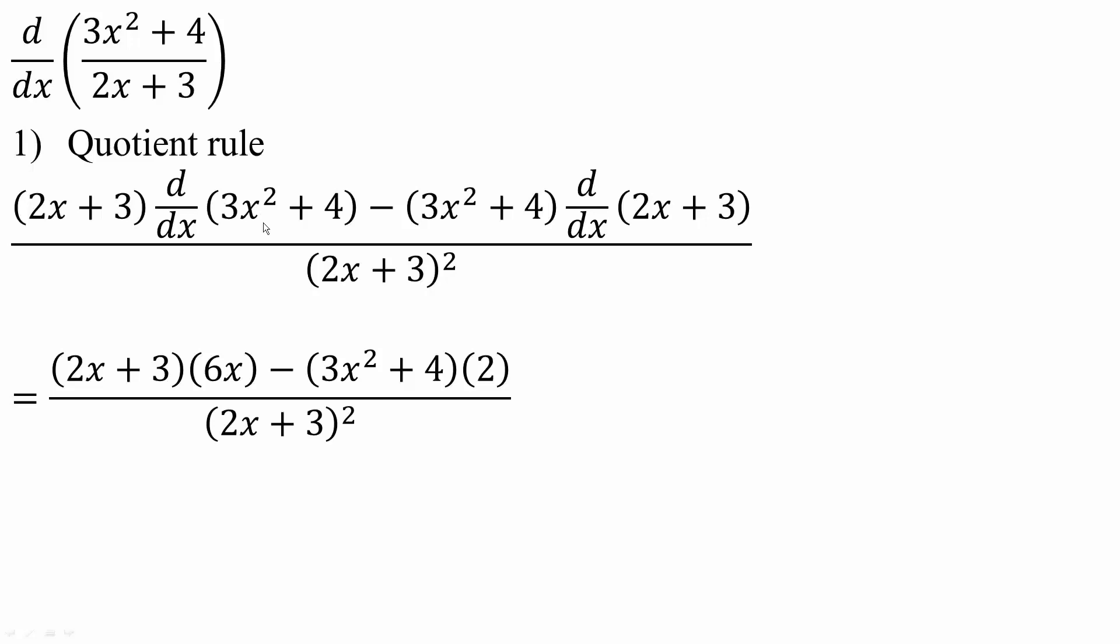And it's going to be low d high minus high d low divided by the square of what's below. So low would be this term right here, d high, so the derivative of the top term minus high top term times derivative of the bottom term divided by the square of what's below, so you square the bottom part.